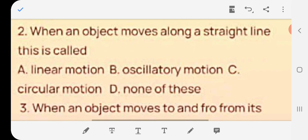When an object moves along a straight line, this is called A linear motion, B oscillatory motion, C circular motion, D none of these. The answer is A linear motion.